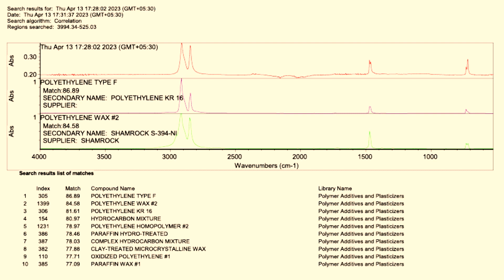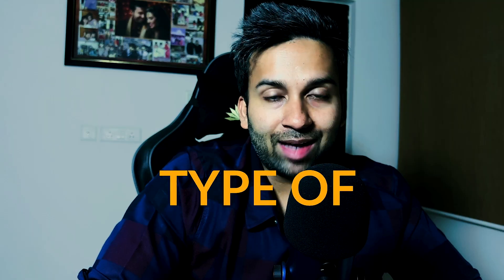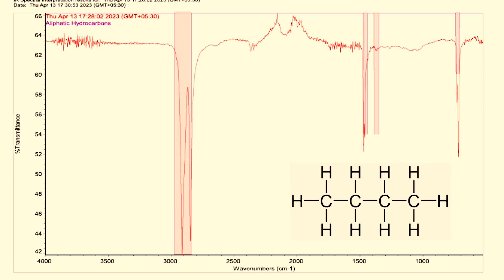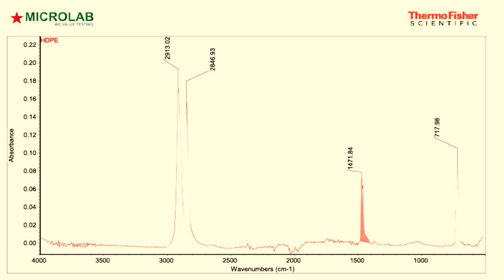Our sample shows an 86.89% match with the polyethylene sample in our database. The software can also provide the type of functional groups present in the sample, which would be useful for a polymer chemist. Here we see the sample is primarily made of aliphatic hydrocarbons — open-chained carbon-hydrogen bonds. The characteristic peaks for polyethylene are broadly in the range of 2800 to 2950 per centimeter; specifically, peaks appear at 2915 and 2847 per centimeter, with strong absorption also near 1470 per centimeter.